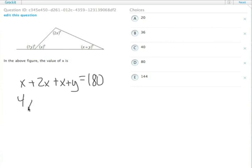So this is 4x plus y equals 180. And we can actually just say then that y equals 180 minus 4x.